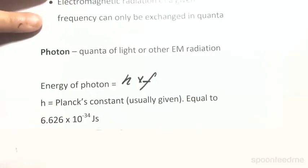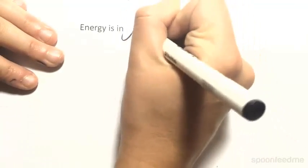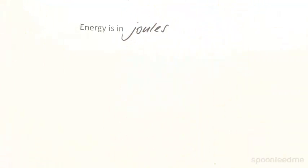We're always going to be given Planck's constant. And it's actually equal to 6.626 times 10 to the power of negative 34 joule seconds. Energy, when we calculate this energy, is always going to be given in joules. So that's the unit that we use for energy.